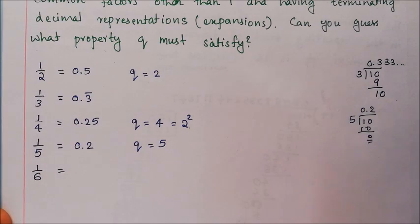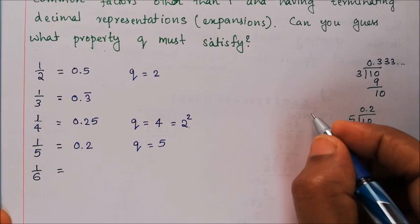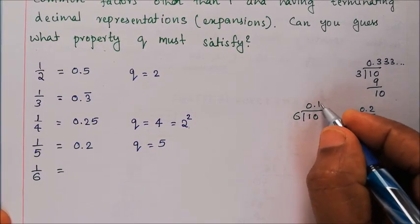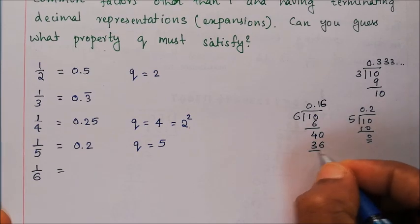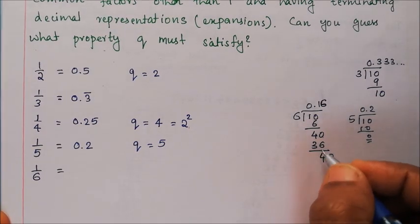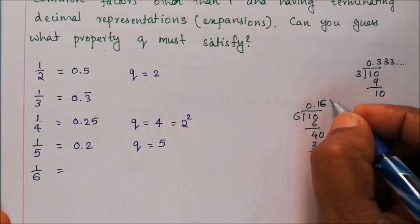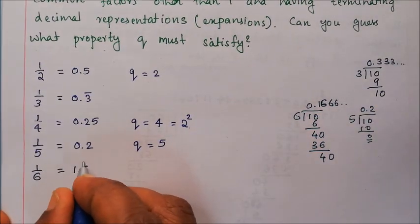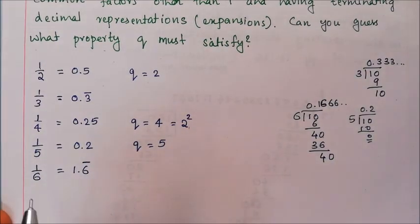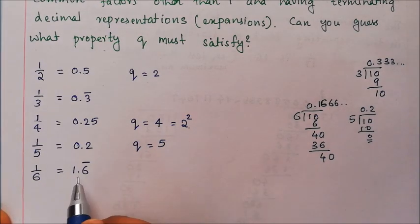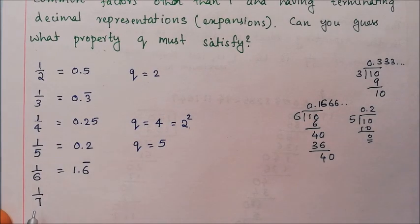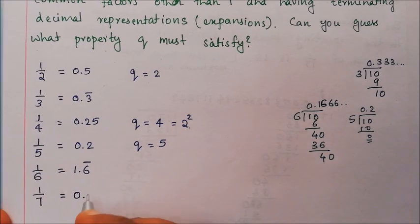For 1 by 6, the decimal expansion is non-terminating. This is because q equals 6 equals 2 times 3, and 3 is a factor that is neither 2 nor 5.